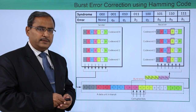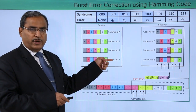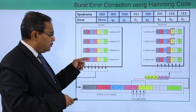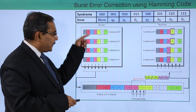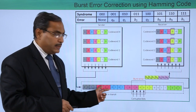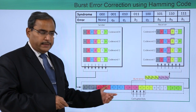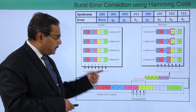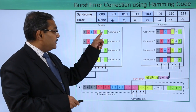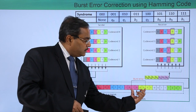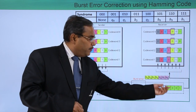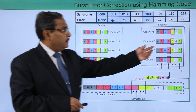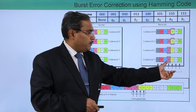Now, what will happen in the case of burst error? Consider 4 code words to be sent. The bits are transmitted sequentially. Bit corruption has taken place: a portion that was supposed to be 1, 0, 0, 1 has become 1, 0, 1, 0, and another portion that was supposed to be 1, 1, 1, 1 has become 0, 0, 1, 1. So 4 bits in total have got corrupted across the received code words. The corrupted bits are identified in the corresponding received data.